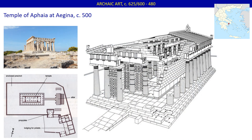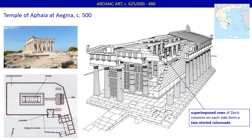The interior had superimposed rows of Doric columns on each side, forming a two-storied colonnade. From this time on — really the end of the Archaic period — the two-storied interior colonnade became part of the Doric canon. Some of the pediment sculptures survive, which we'll look at as beautiful examples of Archaic architectural sculpture in Lecture 5.